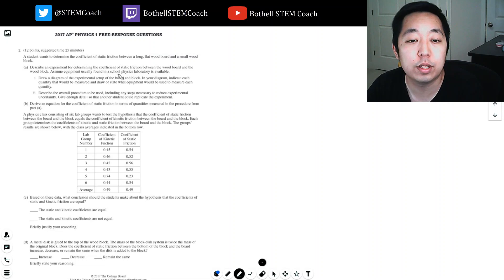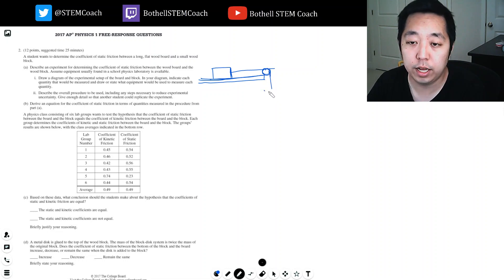So you want something that's determining the coefficient of static friction between a wood board and block. What I might do is put a pulley here and put a string, and I'm going to have something that adjusts the amount of force I'm pulling here. Because static friction, that coefficient, you want to know when it starts moving, when it starts accelerating. So I can adjust the weight of something like this by filling this bucket with different sized masses that I can measure.